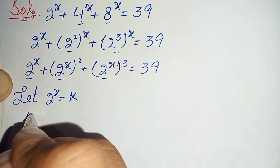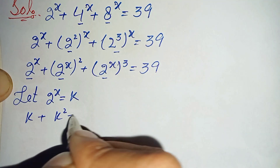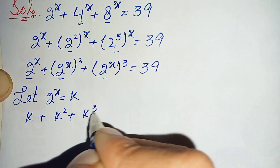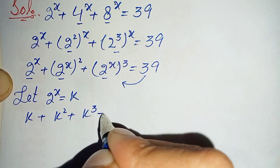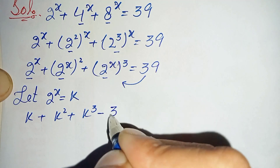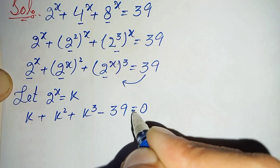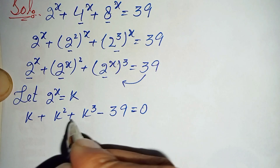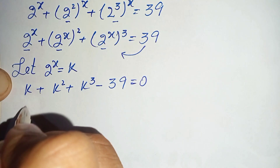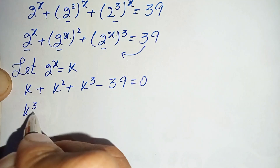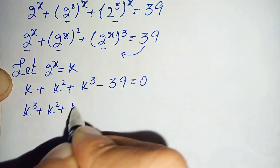This will become k plus k squared plus k cubed. We will move 39 to the left hand side, becoming negative 39, so the equation is k cubed plus k squared plus k minus 39 is equal to 0.